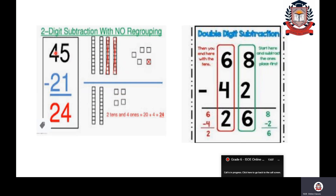Four tens minus two tens gives you two tens, or twenty. Two tens makes twenty and four ones makes four. Twenty plus four gives you twenty-four. This is how we can represent subtraction using number blocks. Forty-five minus twenty-one equals twenty-four.